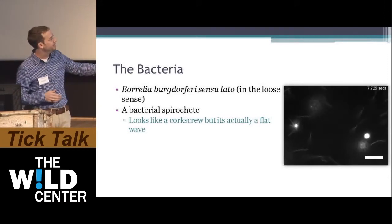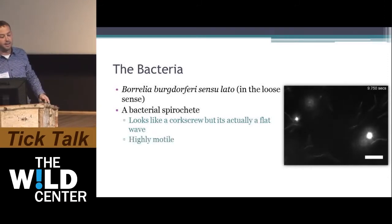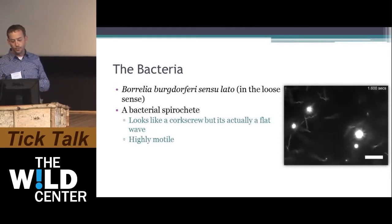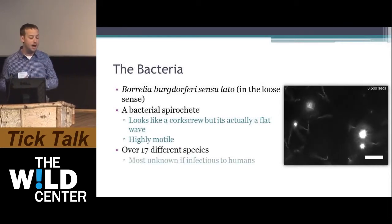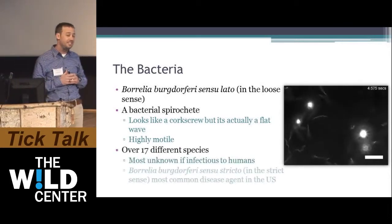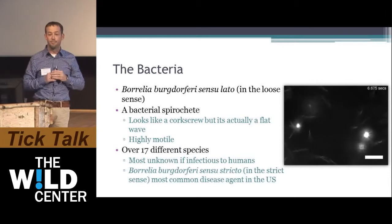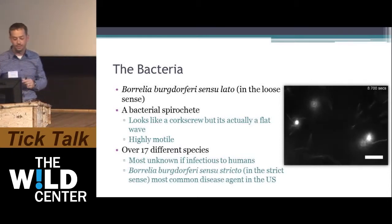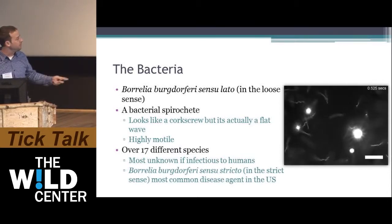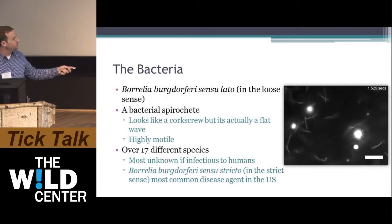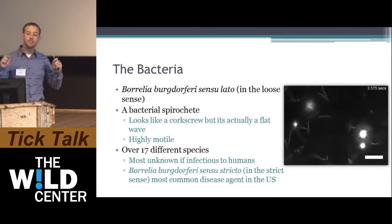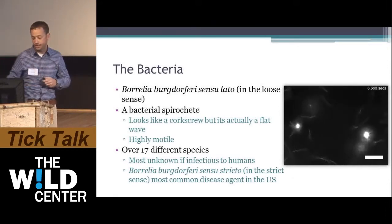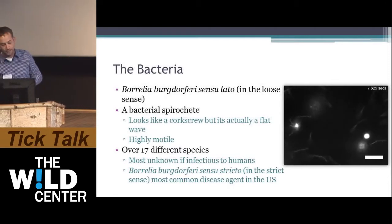You can see the bacteria here in the slide. They're highly motile — they move around, they wiggle. There are actually 17 different species worldwide of Borrelia burgdorferi sensu latu. In the United States, Borrelia burgdorferi sensu stricto, meaning in the strict sense, is the most common disease agent for humans.